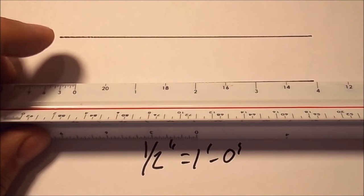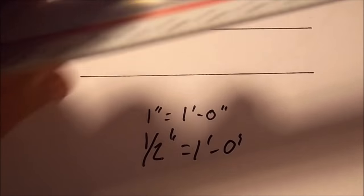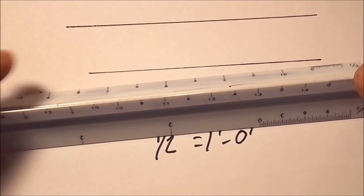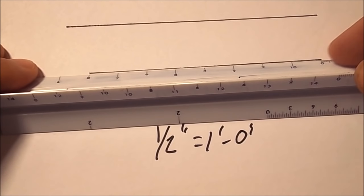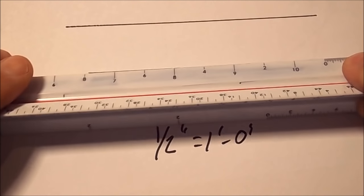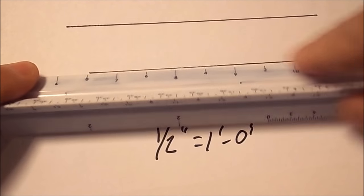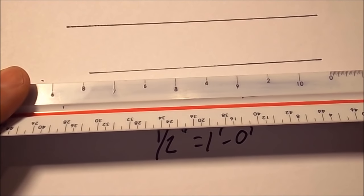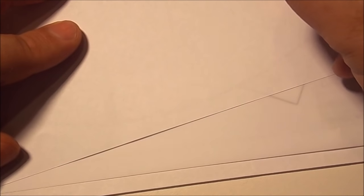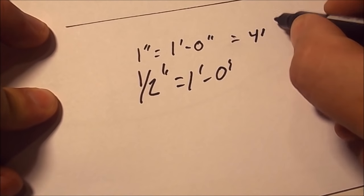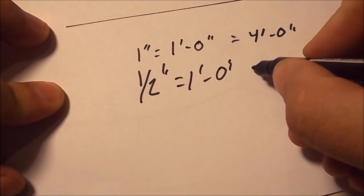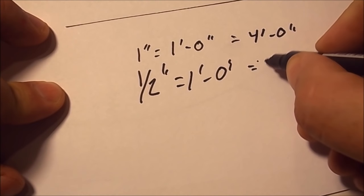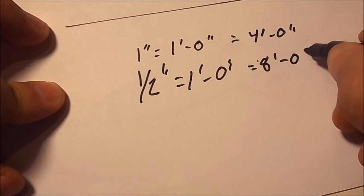But what happens if we decide this wants to be in half inch scale instead? I've got my half inch scale over here now. I'm going to line the zero up right there to the end of the line, and then come around down over here and see that yep, eight is the answer there. So in one inch scale this equals four foot zero inches, and in half inch scale it equals eight foot zero inches.